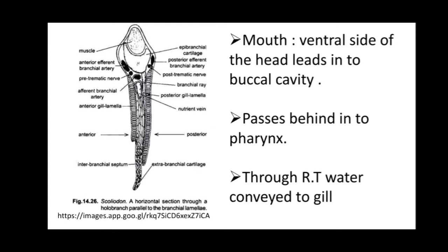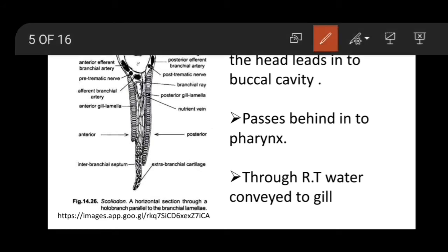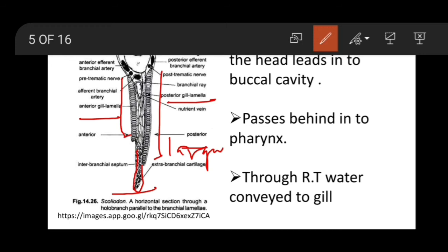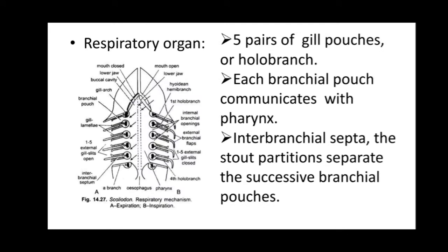Now in detail of the gill: this portion is known as the interbranchial septum, and these are the extrabranchial cartilage. This is the anterior gill lamella — this portion is the anterior gill lamella, and this one is the posterior gill lamella. The anterior is smaller than the posterior. You can also see the afferent branchial artery, post-trematic nerve, and the branchial ring.